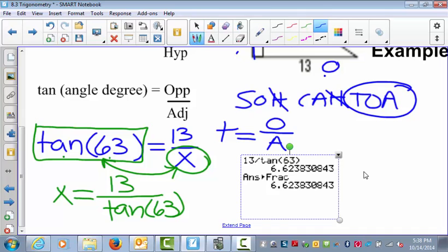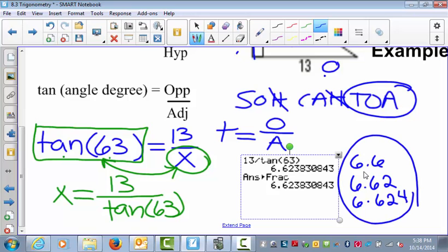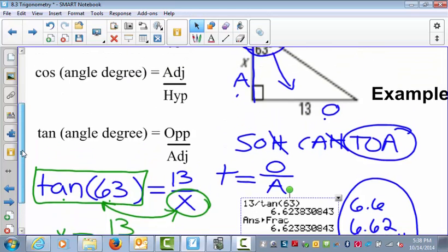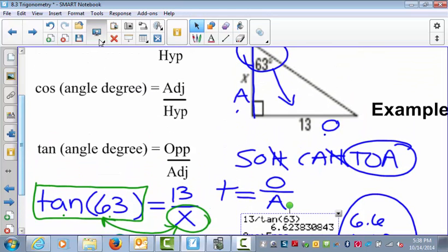So our answer is, and it doesn't tell us where to round to, so you can round wherever is appropriate. I'm going to say that my answer is 6.6. You could say 6.62, or you could try 6.624. So all of these are appropriate answers for X. Notice X was our adjacent side.